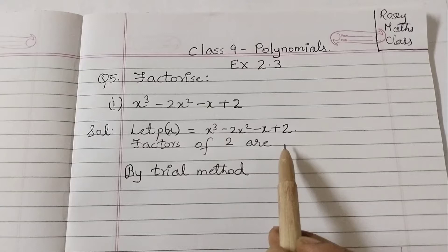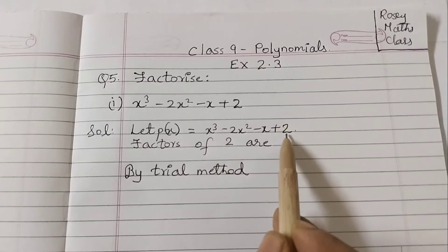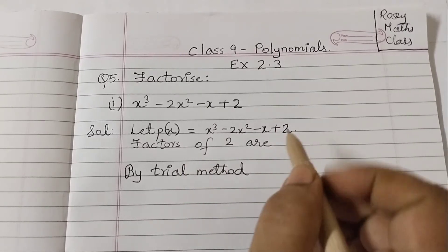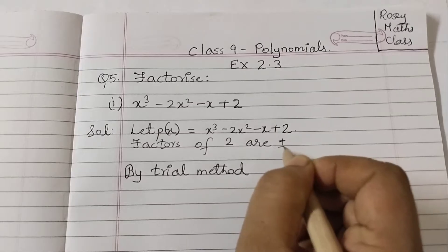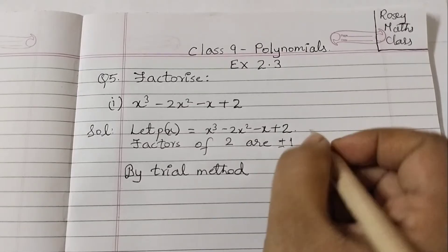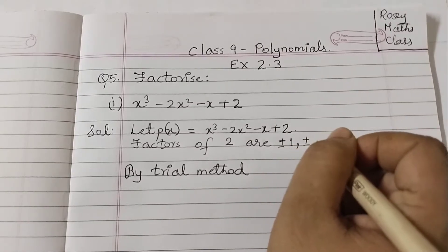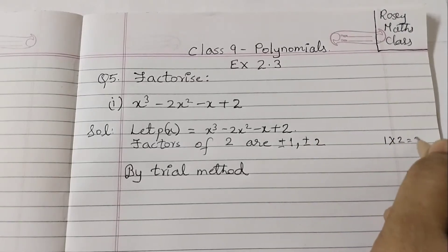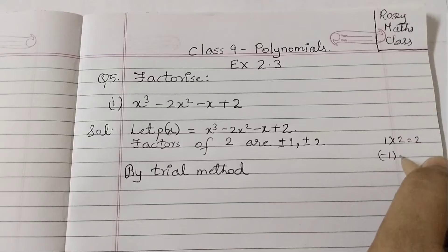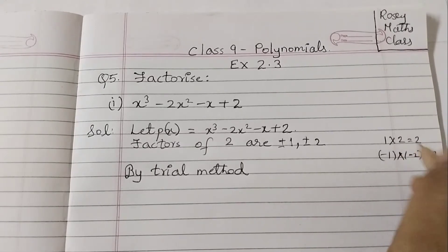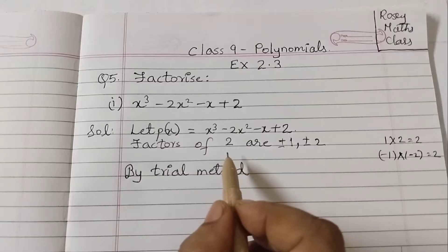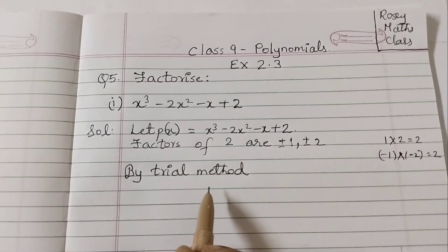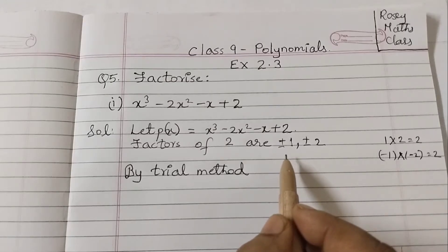Next step: find out the factors of the constant term 2. So factors of 2 are plus or minus 1, plus or minus 2. That's why these are the factors of 2. Now by trial method we will find out which factor is giving us zero.